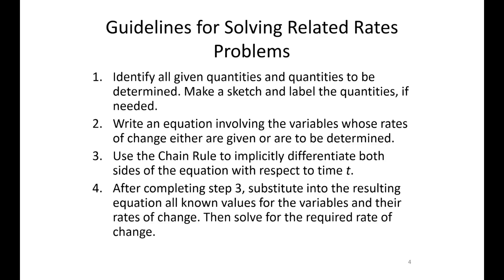Some guidelines for solving related rates problems. First, identify all given quantities and quantities to be determined — know what you're talking about. If helpful, make a sketch and label the quantities, such as when drawing a rectangle or building a fence. Next, write an equation involving the variables whose rates of change are given or to be determined. Then use the chain rule to implicitly differentiate both sides with respect to time t. After that, substitute all known values for the variables and their rates of change, then solve for the required rate of change.